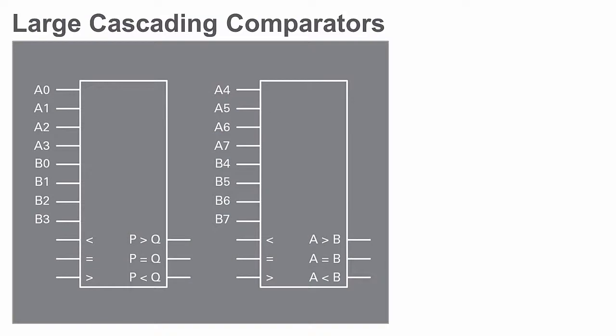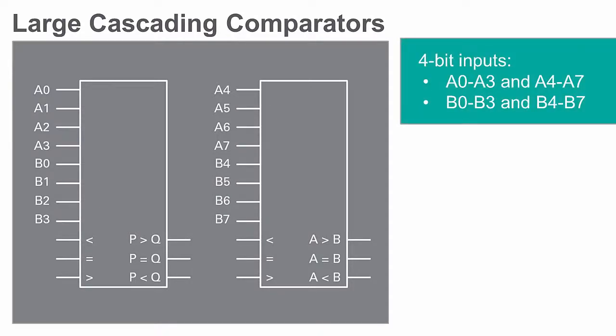Large comparators can be designed in a cascading fashion to accommodate N number of inputs. For example, let us consider a 4-bit magnitude comparator.